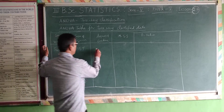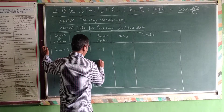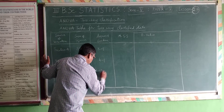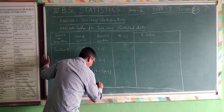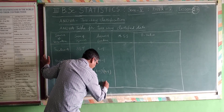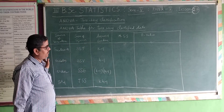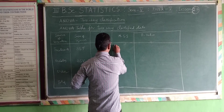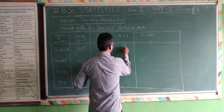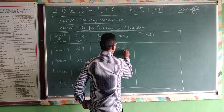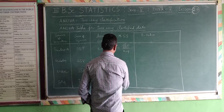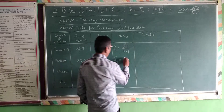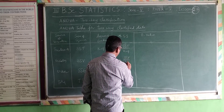For degrees of freedom: for treatments it is K minus 1; for varieties it is H minus 1; for error it is (K minus 1) times (H minus 1); and for total it is KH minus 1. For varieties, the mean sum of squares is SSV divided by H minus 1.